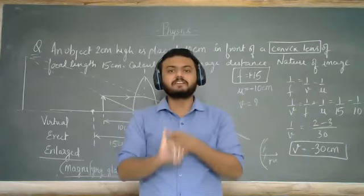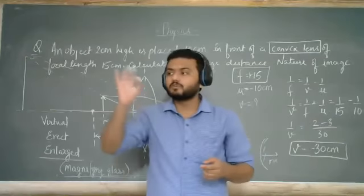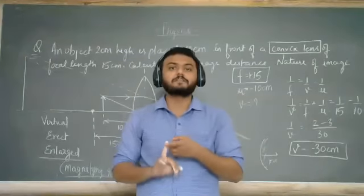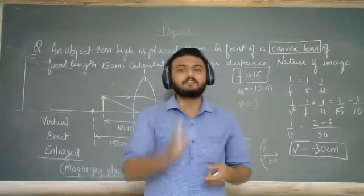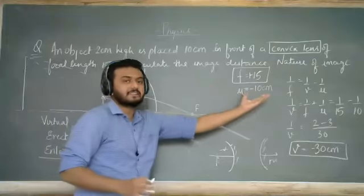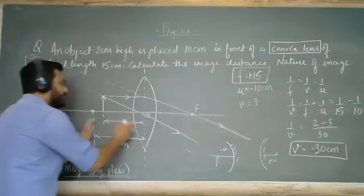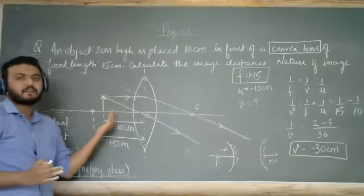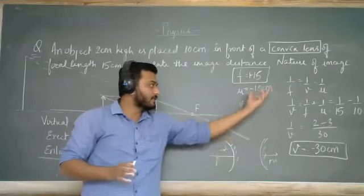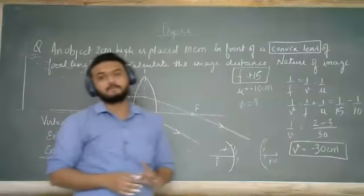For a convex lens, the focal length is positive. For a concave lens, the focal length is negative. The object distance u is always negative because the object is always placed on the left side. Once you apply the formula, the answer will be clear.